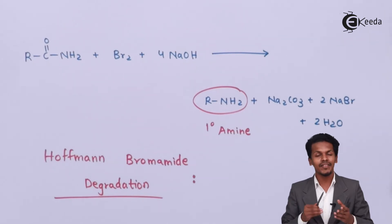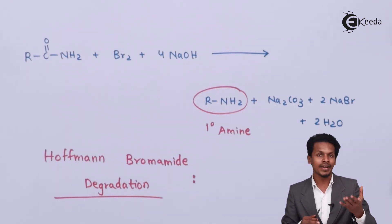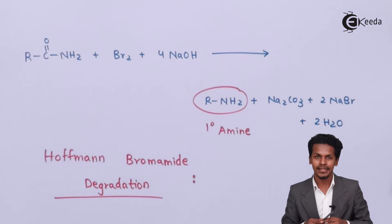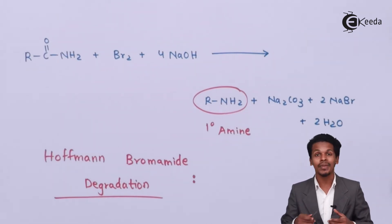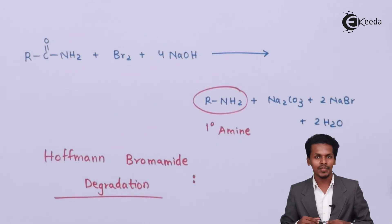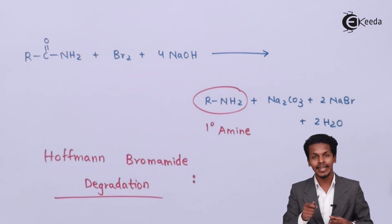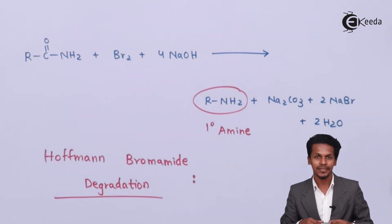In the previous lecture we discussed that we can't easily prepare aromatic amines or aryl amines by other methods, but in this process we can prepare aromatic amines — for example, aniline. Even that can be prepared from this method, so let me give an example.